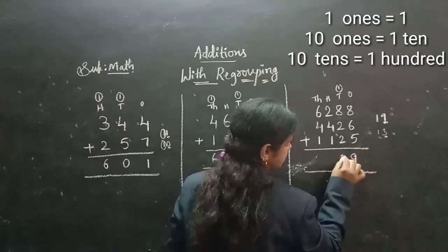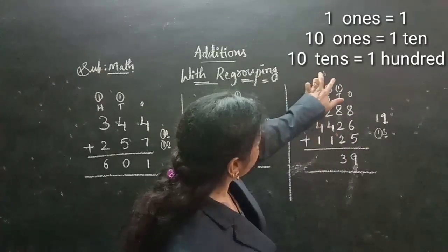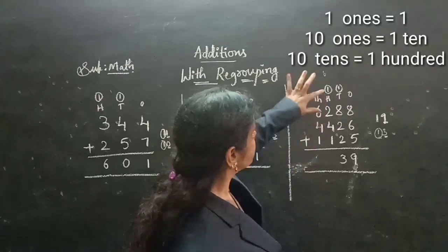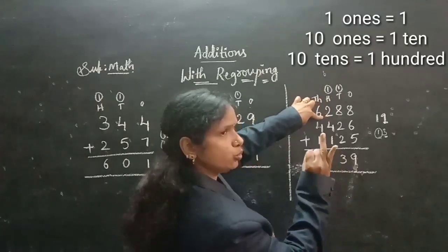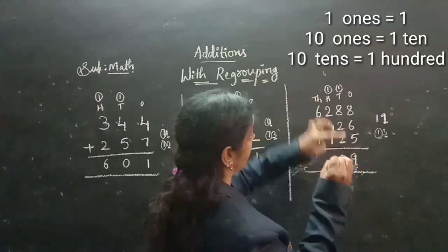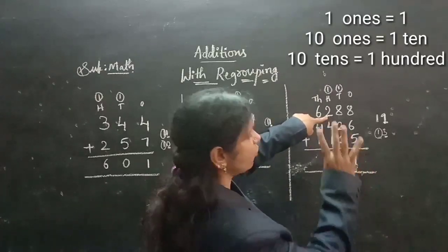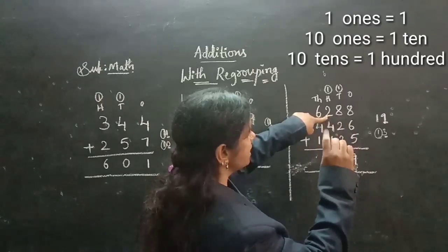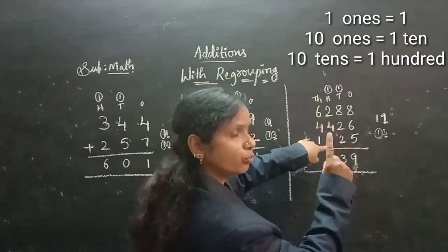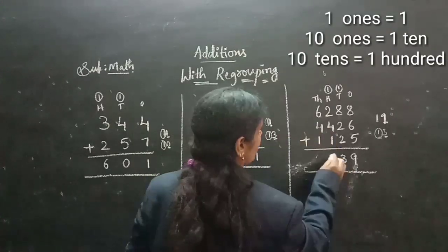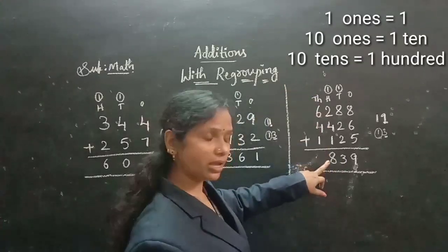So 13 as the answer — this 3 I am taking as the answer, and this 1 I am taking as carry on the before place. Now let's add the 100's column. Here starts with the carry, children. 1 after 2 — nothing but 3. 3 after again 4 means 5, 6, 7. So 7 we are getting. 7 after we need to add 1, so 7 after 1 is nothing but 8. So 8 I am taking here. Here we are not getting any carry because we got a 1-digit number only.